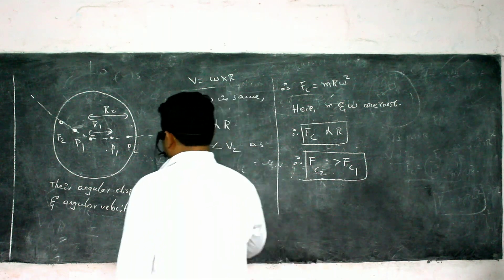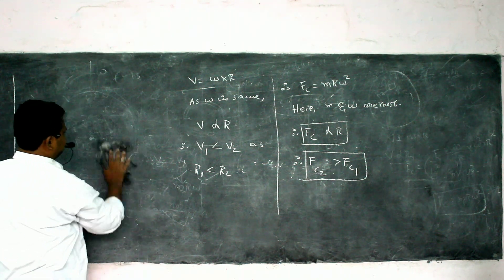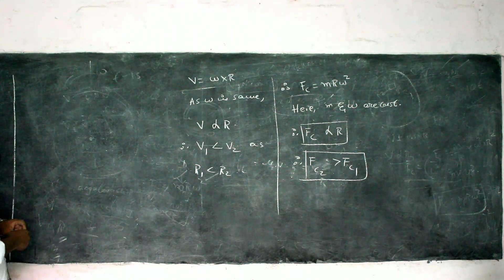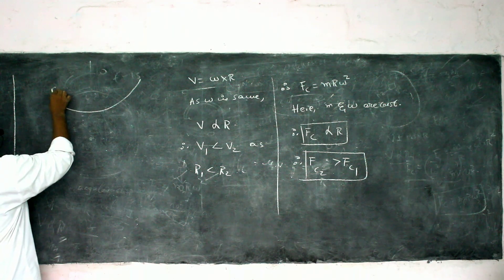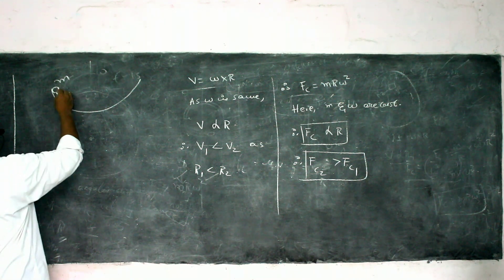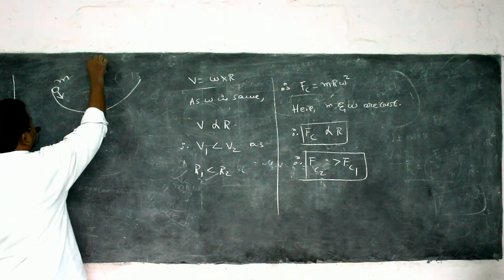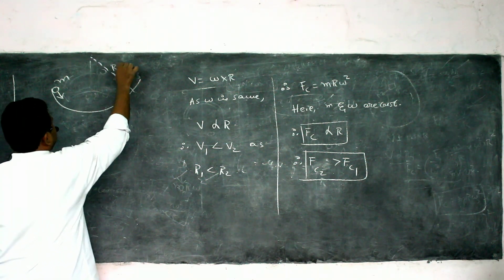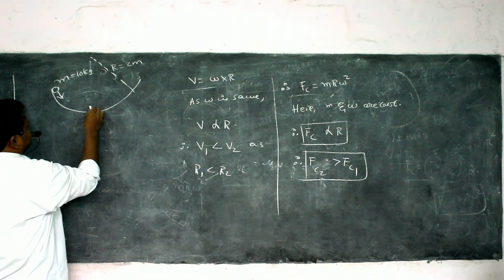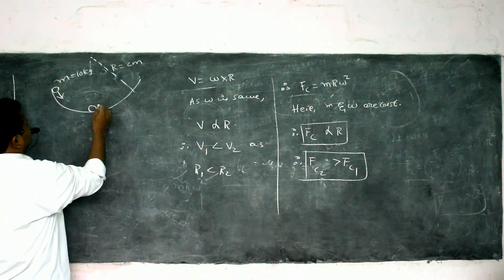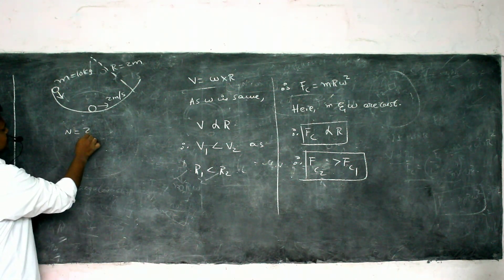Problem: A ball of mass 10 kg moves on a circular path of radius 2 m. At the bottom of the path, its velocity is 2 m/s. Find the normal reaction at that point.